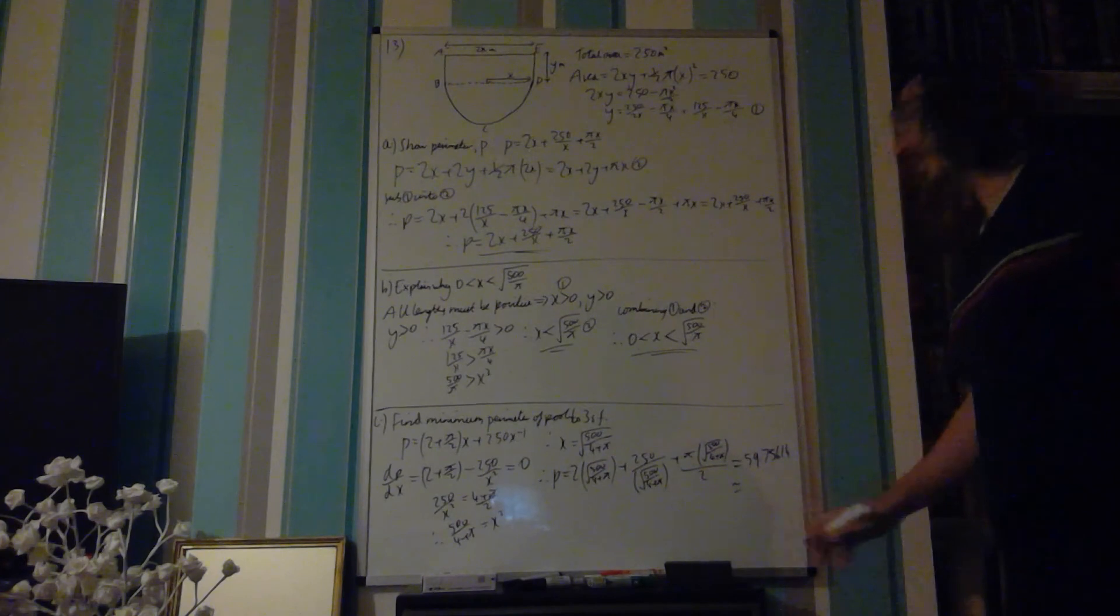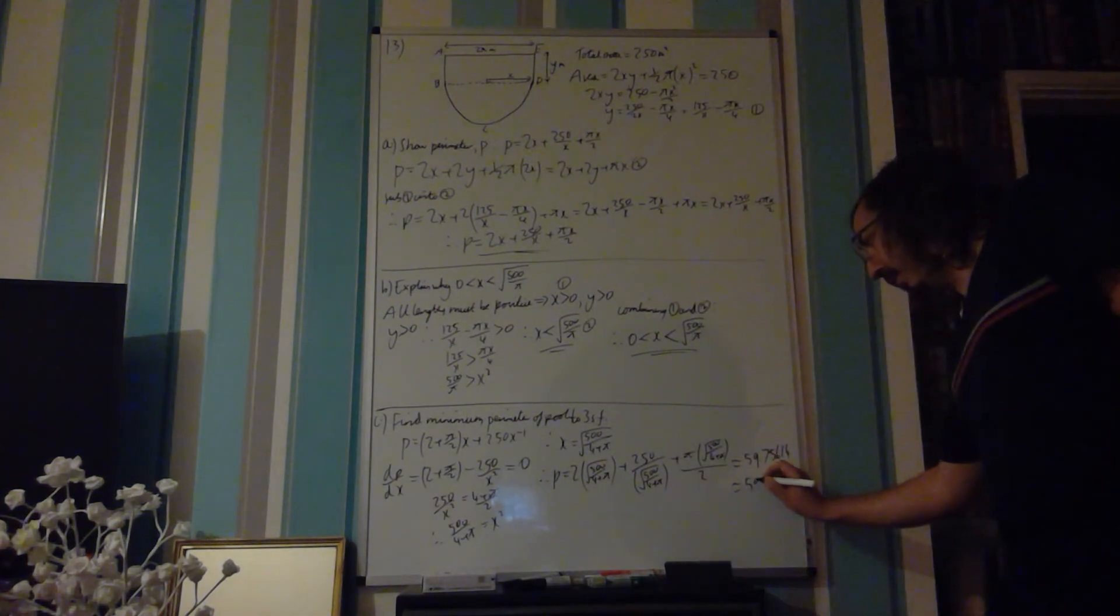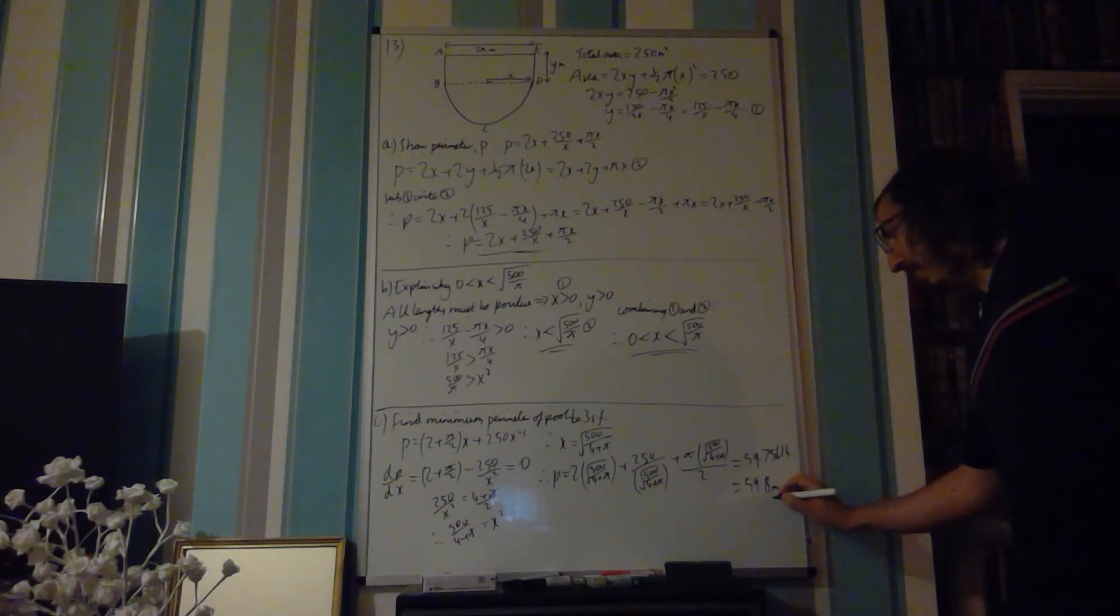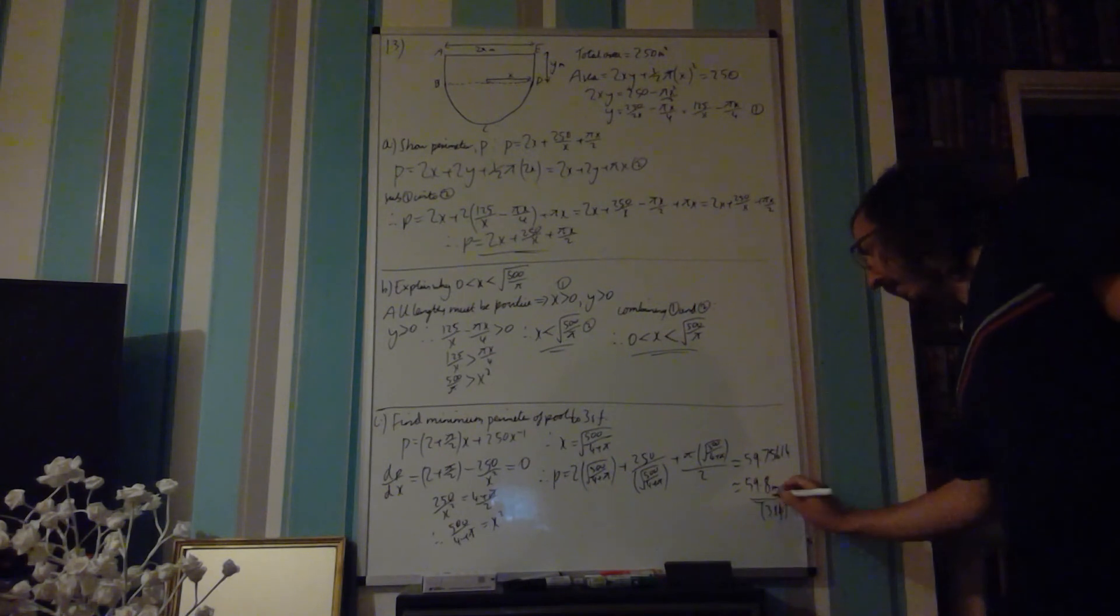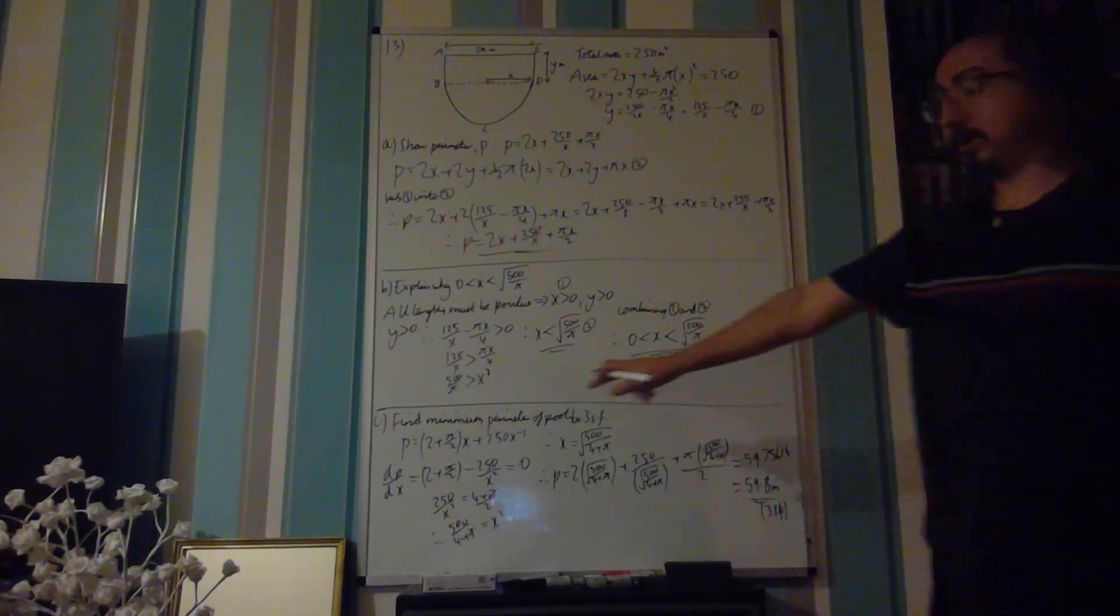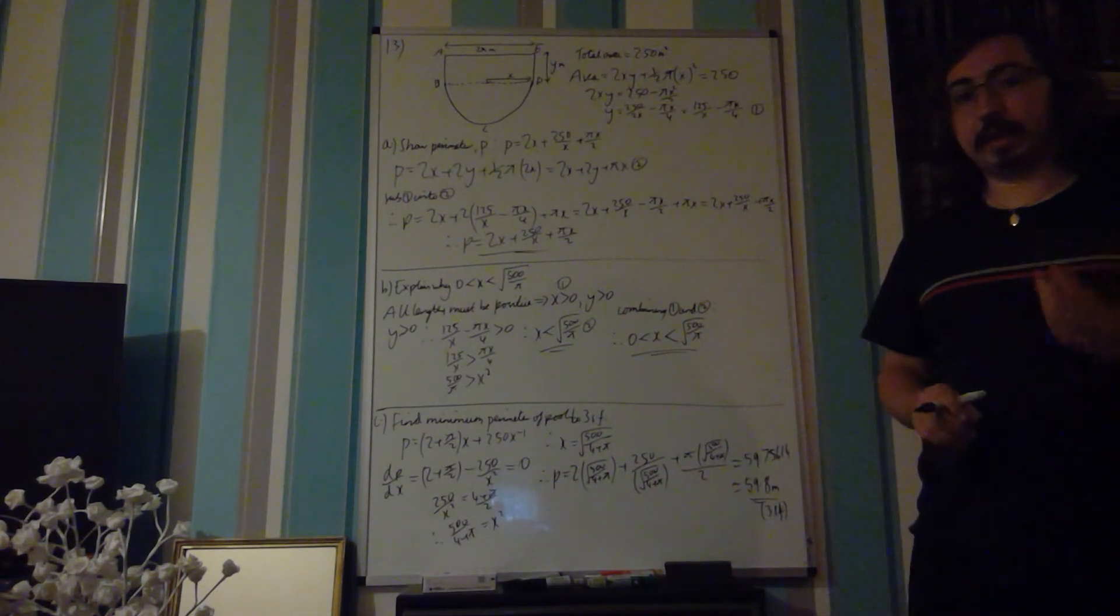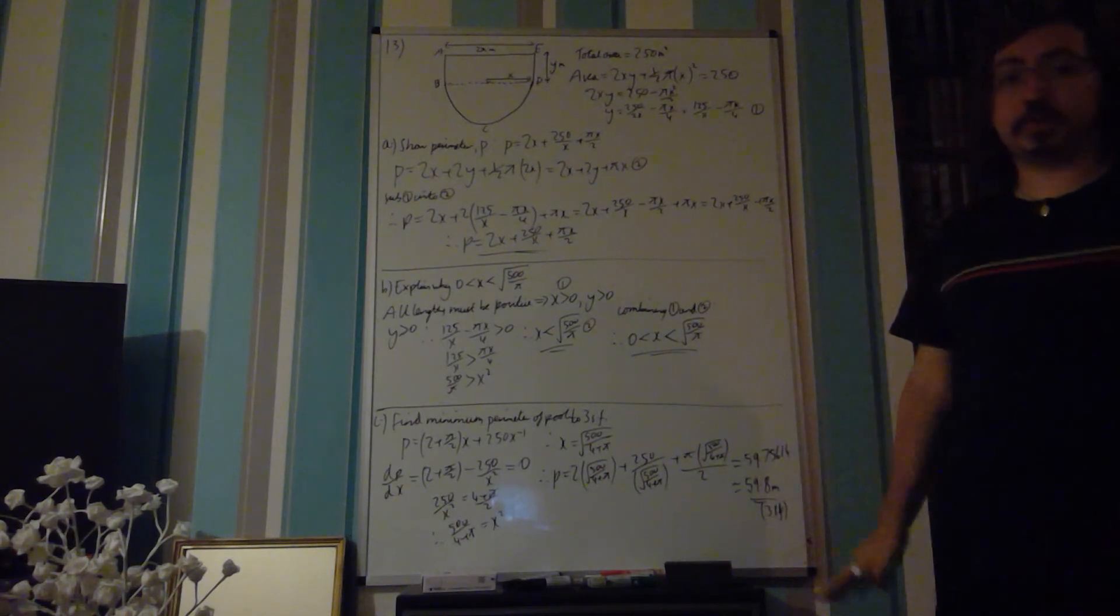But if the question tells you it wants it to three significant figures, so that's 59.8 meters, don't forget the unit to three significant figures. It's meters, because it's the perimeter, and a perimeter is a length. So that's how you solve this problem.